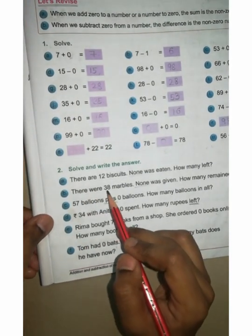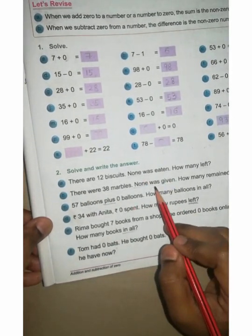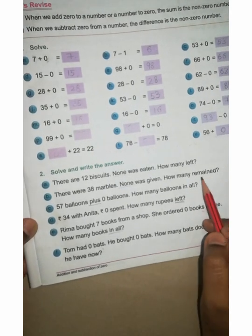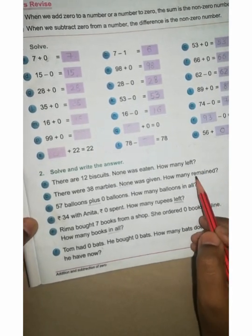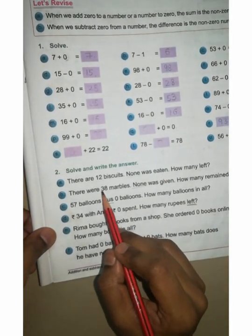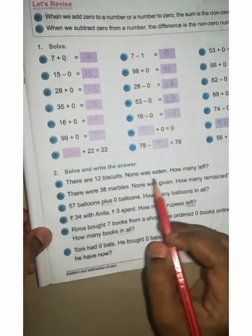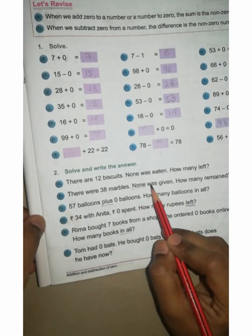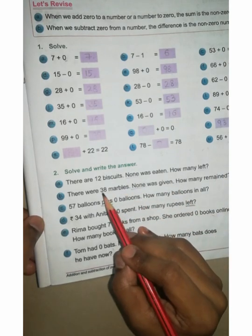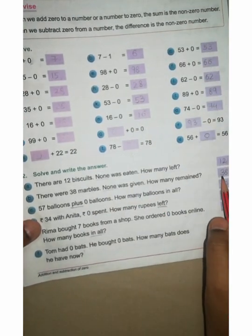Now B: There were 38 marbles, none was given, how many remain? It means remain you are asking, it means subtraction. Question given. You 38 marbles you got. Okay. But none was given. How many remain? As it is you can see 38 marbles right here.